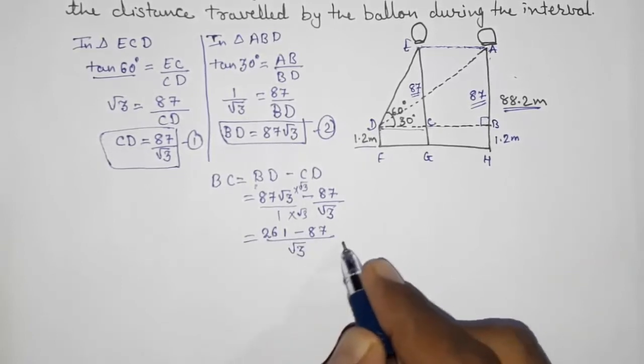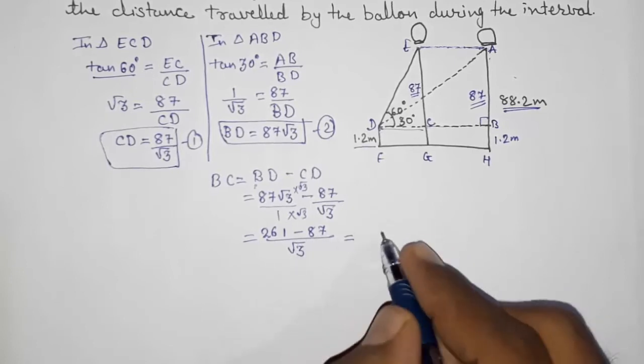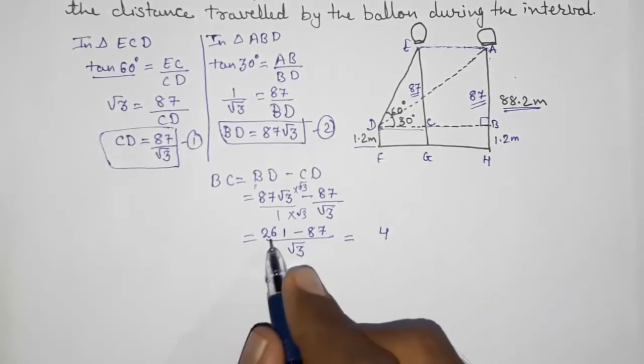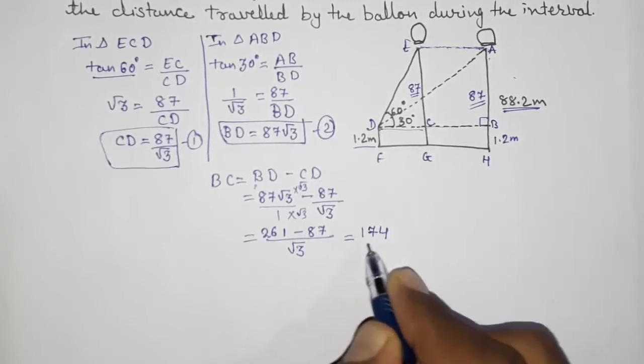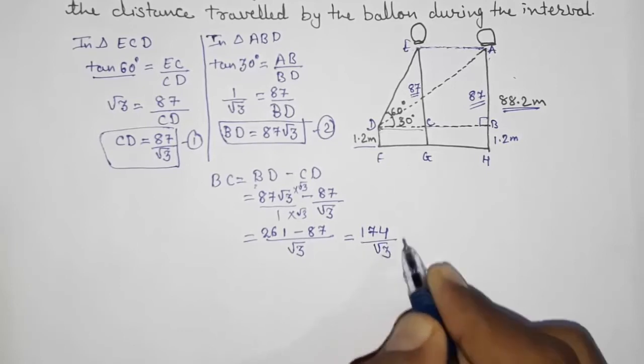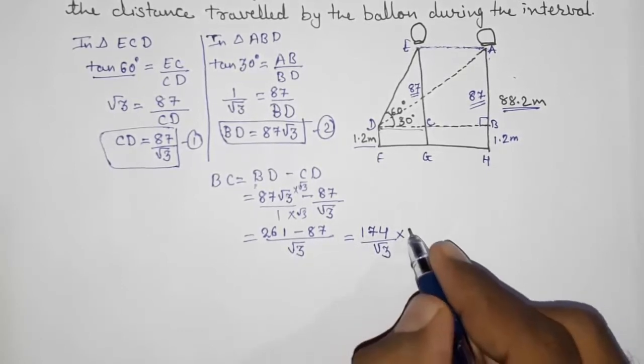Now you can subtract, so what will happen? 11 minus 7 is 4, 15 minus 8 is 7, and then 1 upon root 3. Still you have to rationalize, you have to rationalize because you cannot take root in the denominator.